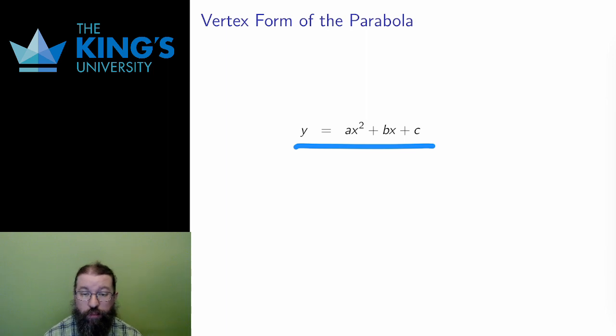Some of you might be familiar with another form of the parabola, the vertex form. I can also write the equation of a parabola as y equals a times x minus b squared plus c. In this form, the geometry is a bit clearer. The point of the parabola, called the vertex, is at the coordinates bc.